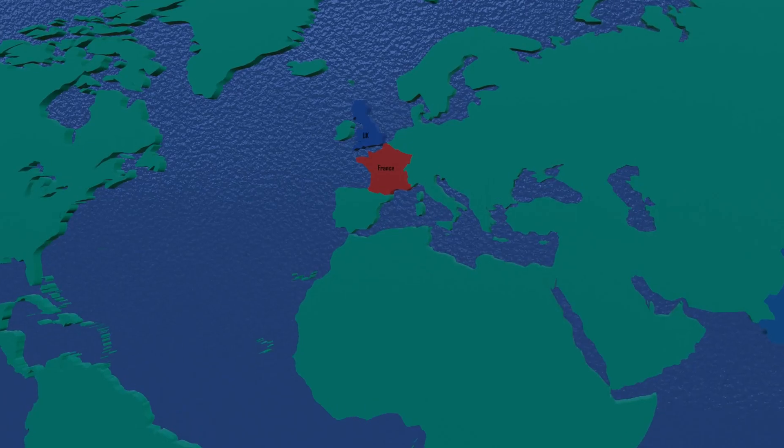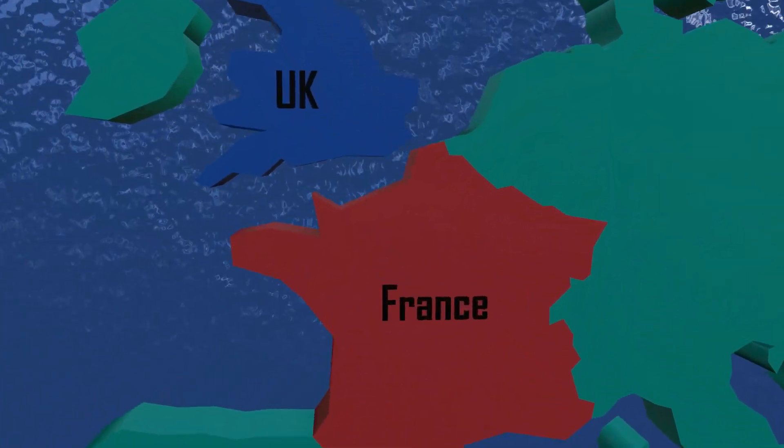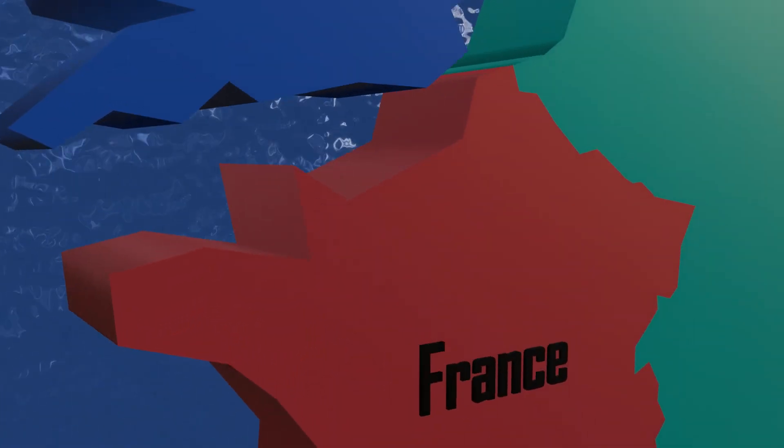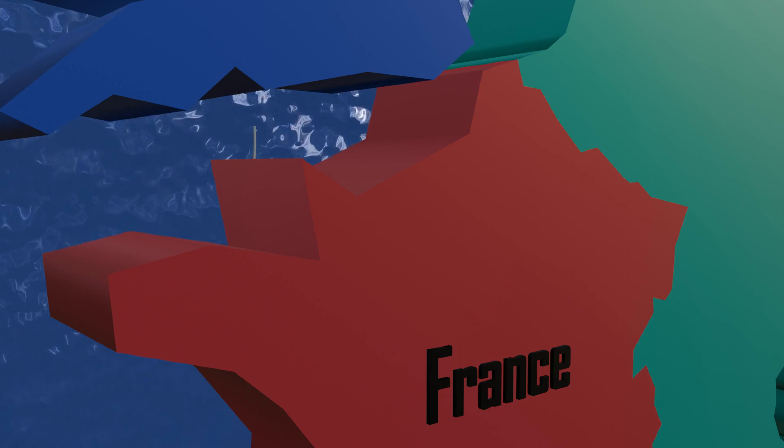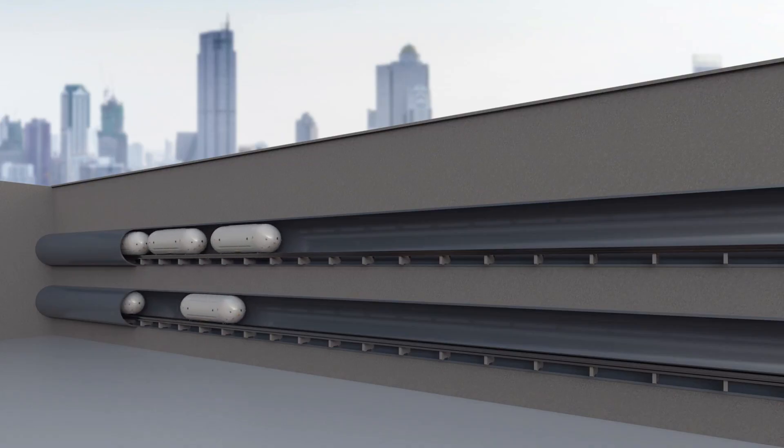On the world map, it connects France and the United Kingdom. To link these two countries, the Channel Tunnel was constructed under the sea, allowing high-speed trains to travel at speeds of up to 160 kilometers per hour.